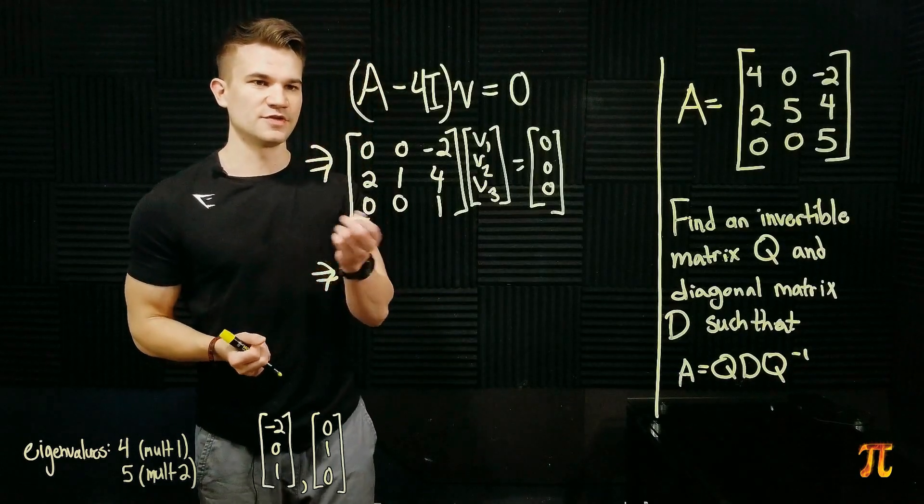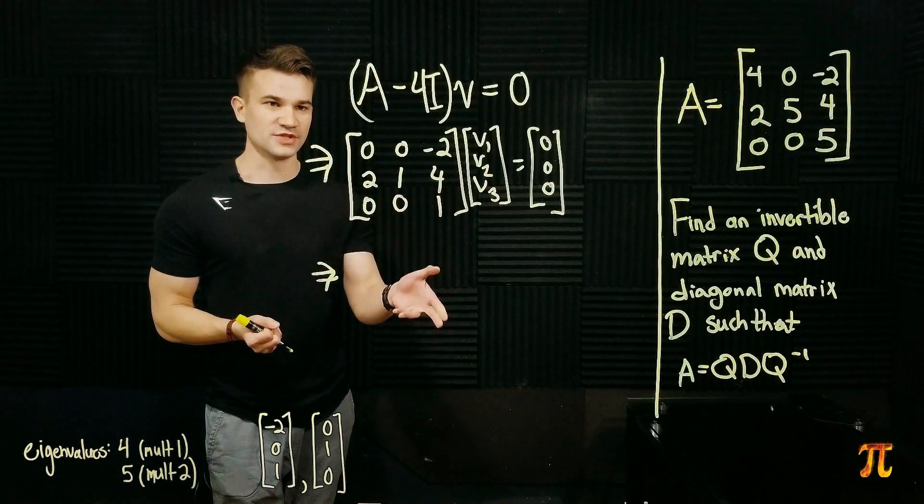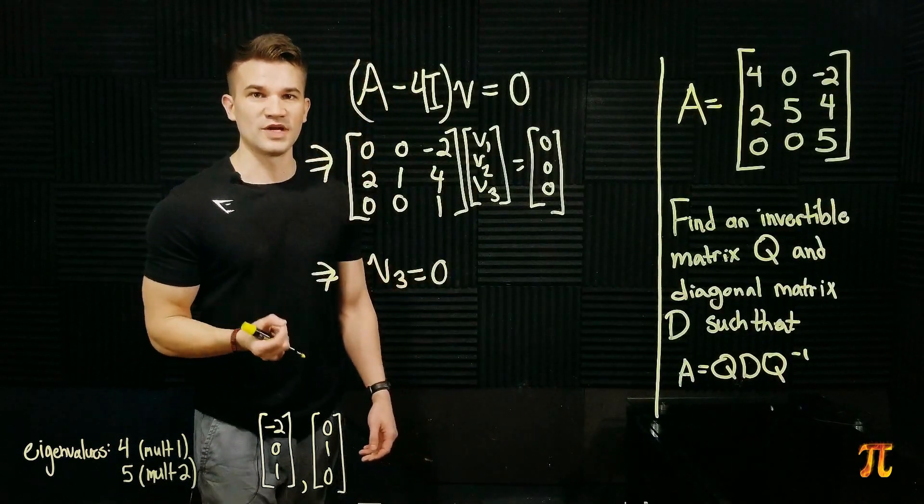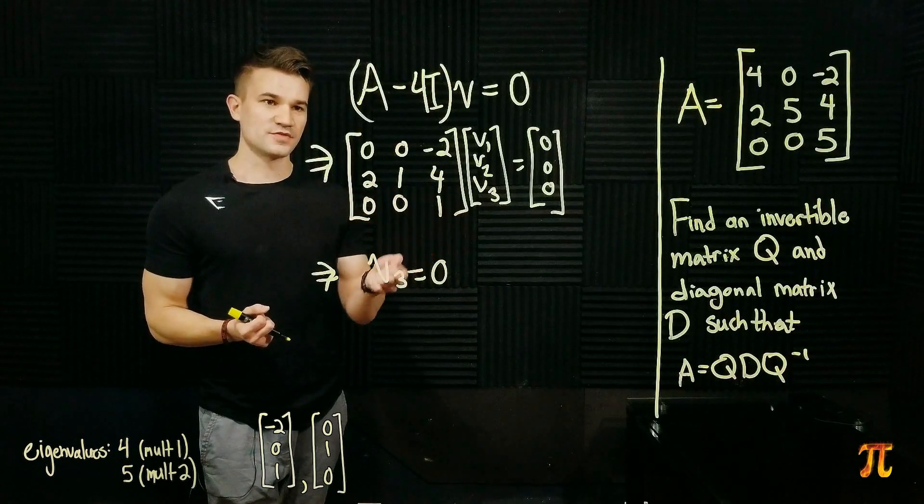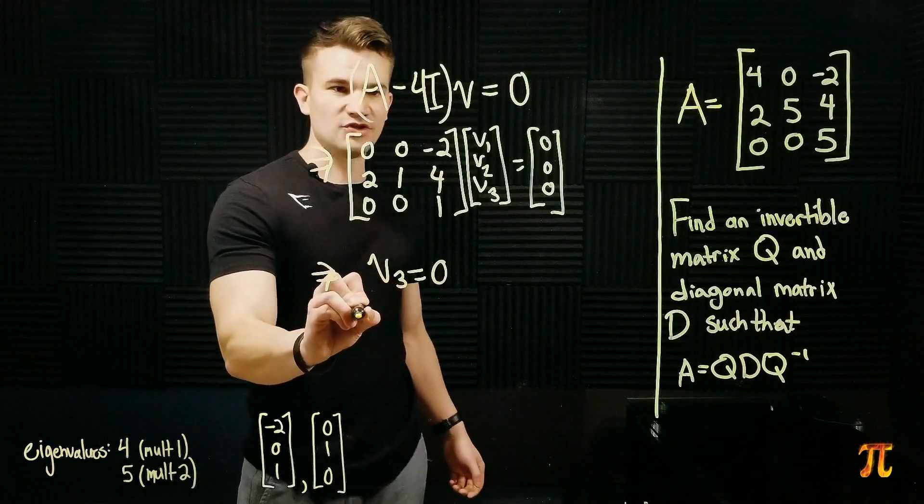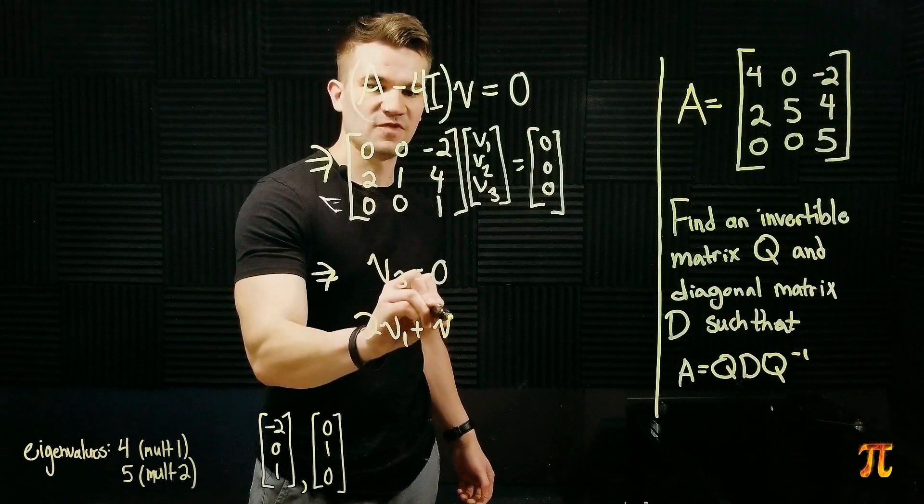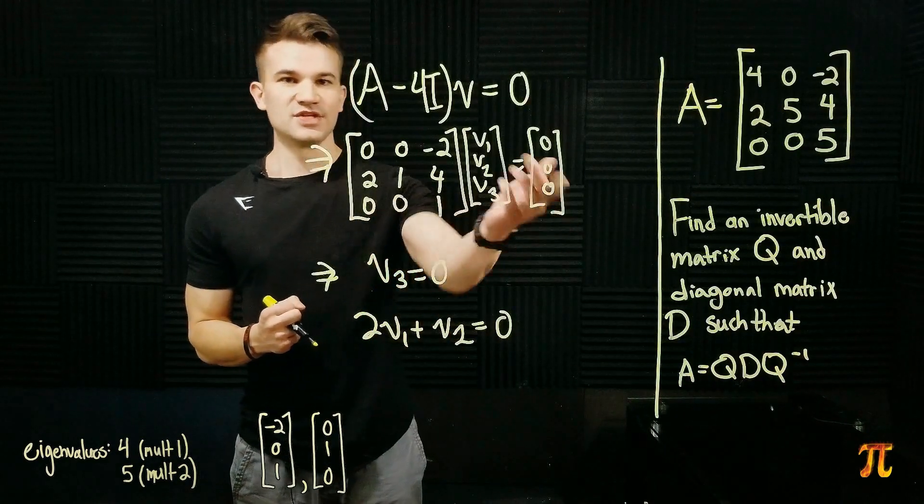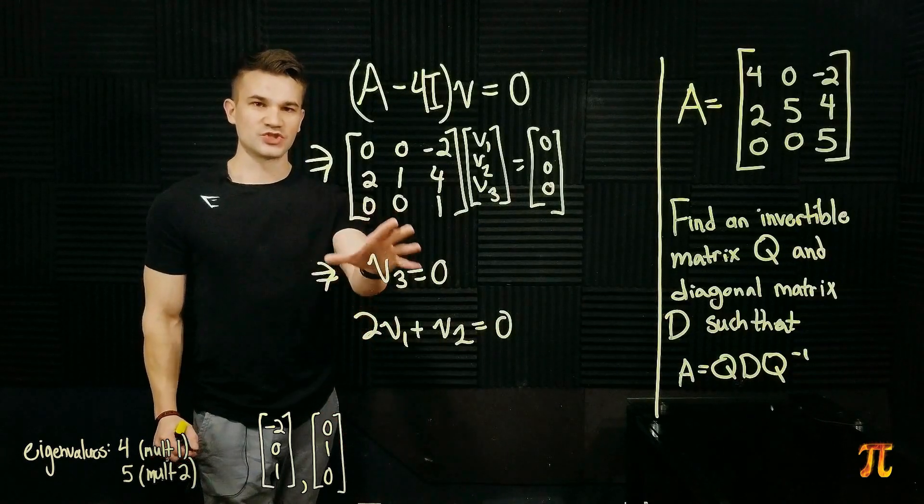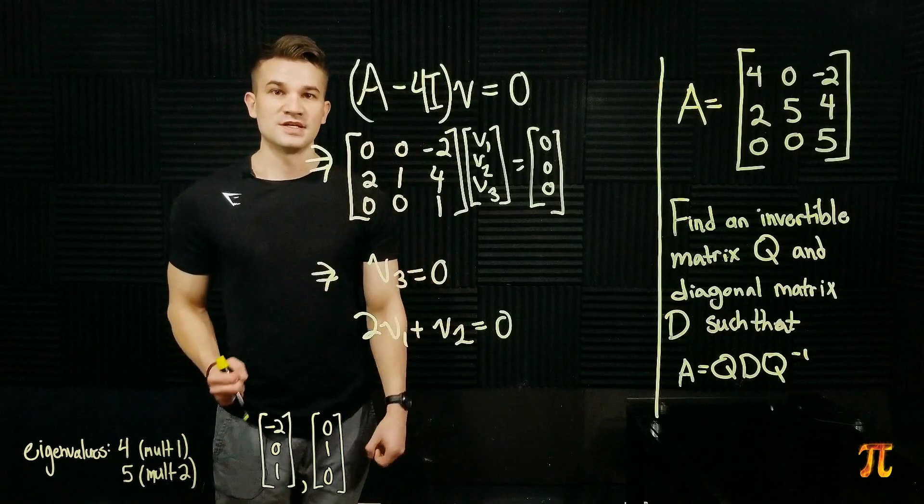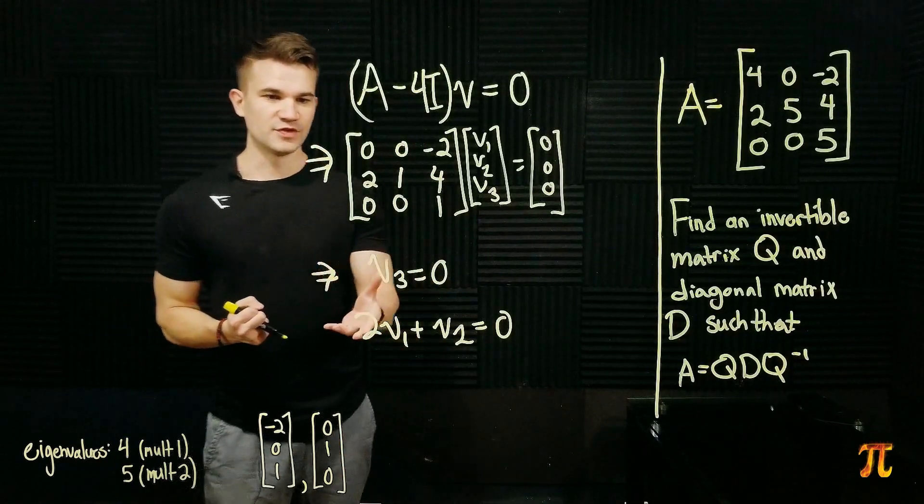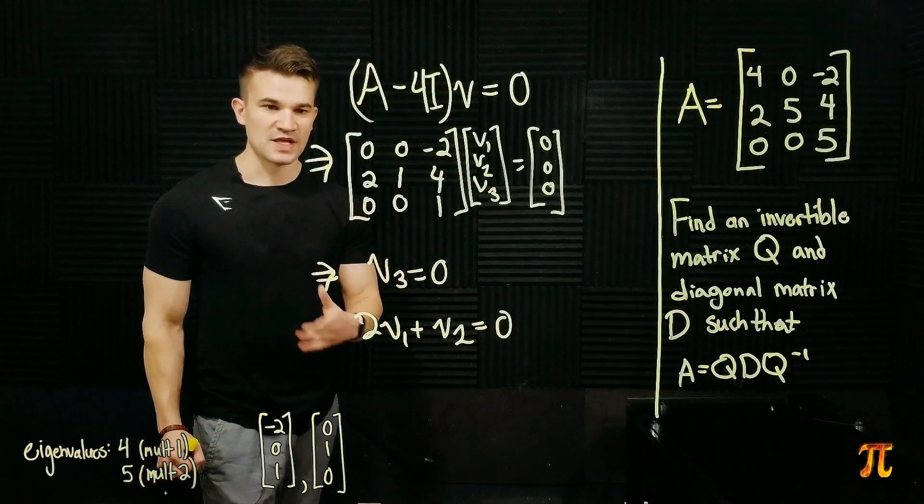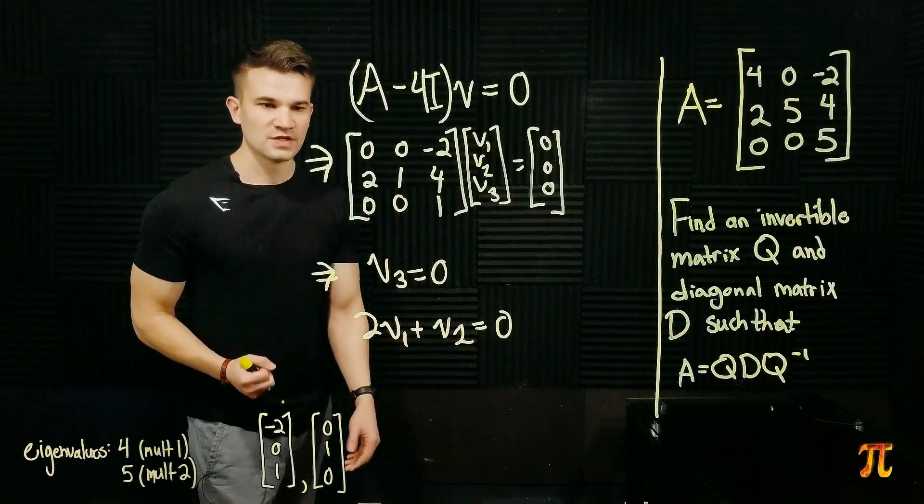So, the first equation we get says that 0 V1 plus 0 V2 plus negative 2 V3 equals 0. But if negative 2 V3 is 0, then V3 is 0. The second equation says that 2 V1 plus V2 plus 4 V3 is 0. We know V3 is 0, so it just says that 2 V1 plus V2 is 0. And the final equation simply states that V3 is 0, which we already knew. So, here is the system of equations or the restrictions put on the coordinates to make V an eigenvector for 4. So, V3 is 0 and 2 V1 plus V2 equals 0. So, we are only going to have one free variable as expected. V3 is fixed as 0. And we can pick either V1 or V2 to act as the free variable. So, we'll solve for V2.